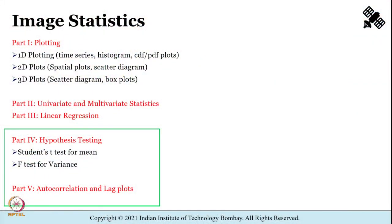In this part of tutorial 4 we shall analyze how to perform hypothesis testing as well as how to deal with autocorrelation, particularly with respect to time series data which is predominant in hydrology and water resources engineering. We finished parts 1, 2, and 3, and now we are going to focus on part 4, where we shall try how to do hypothesis testing — that is student t-test for mean as well as f-test for variance — and how to deal with autocorrelation and lag plots.